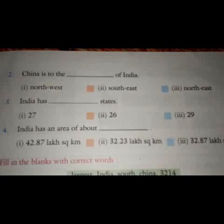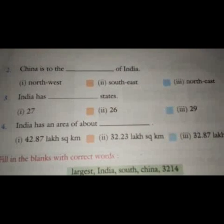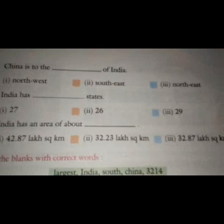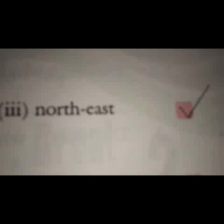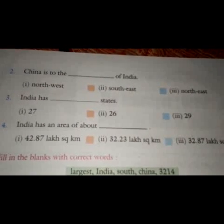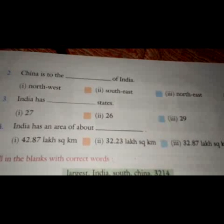The second question is: China is to the dash of India. Your options are: 1st — northwest, 2nd — southeast, 3rd — northeast. The correct option is northeast. Your third question is: India has dash states. Your options are: first — 27, second — 26, third — 29. The correct option is 29.